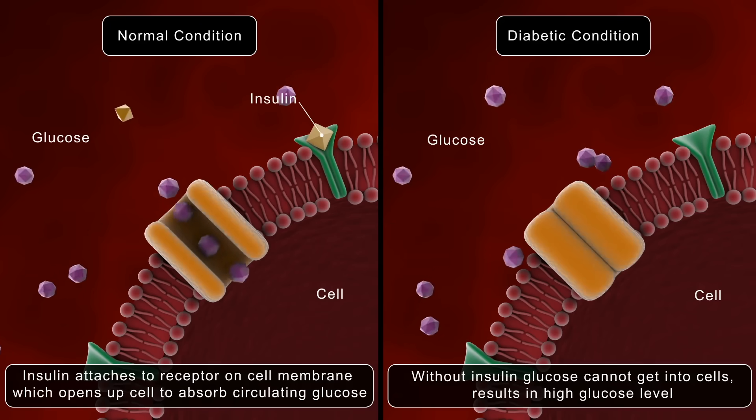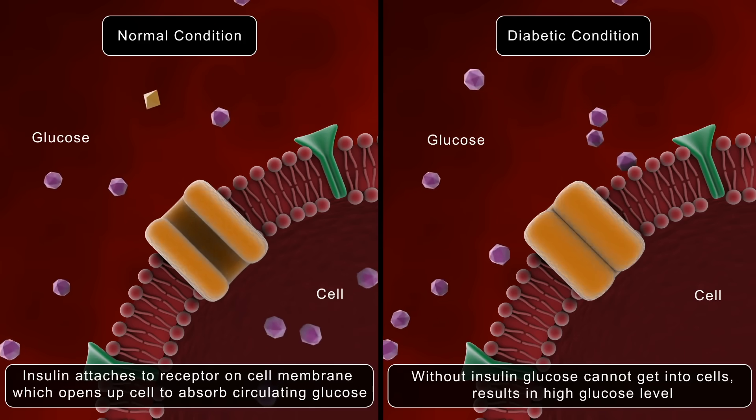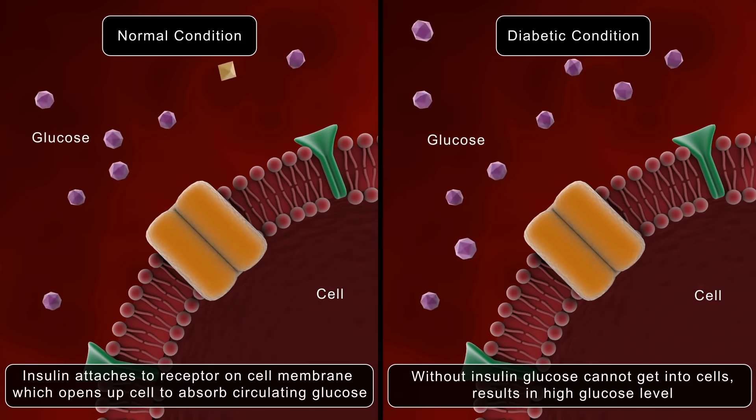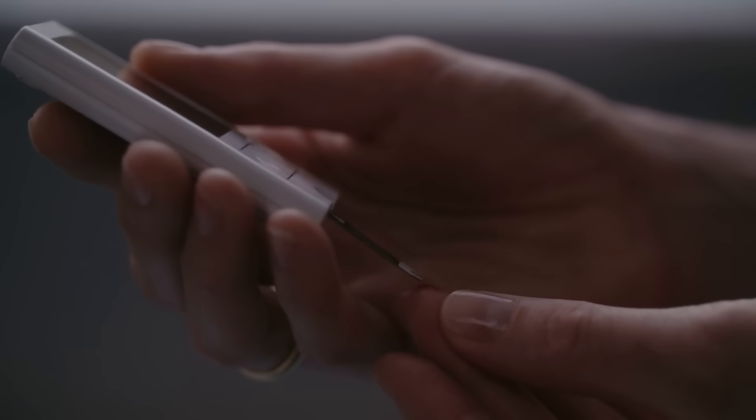For people with diabetes, this system doesn't work as it should. A glucose meter allows them to measure their blood sugar levels and make decisions about food, exercise, or medication to stay healthy.